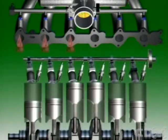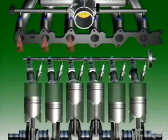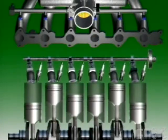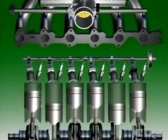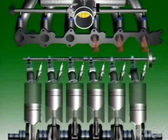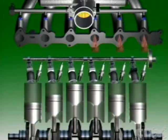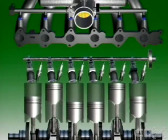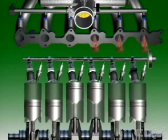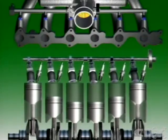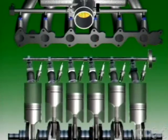Grouped injection divides the injectors into two groups. A six-cylinder engine can have injectors 1, 2 and 3 in Group 1 and injectors 4, 5 and 6 in Group 2. The control unit operates the groups in turn to spray fuel once per engine cycle.